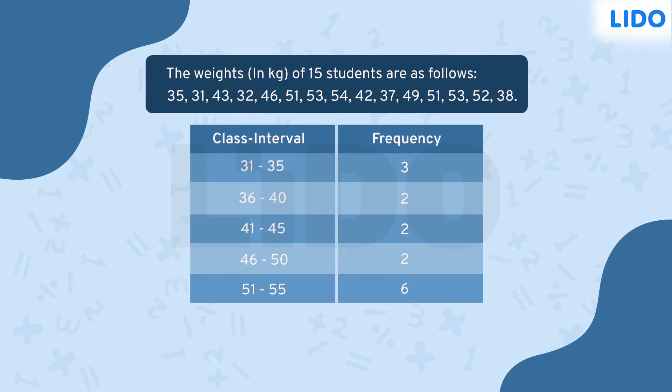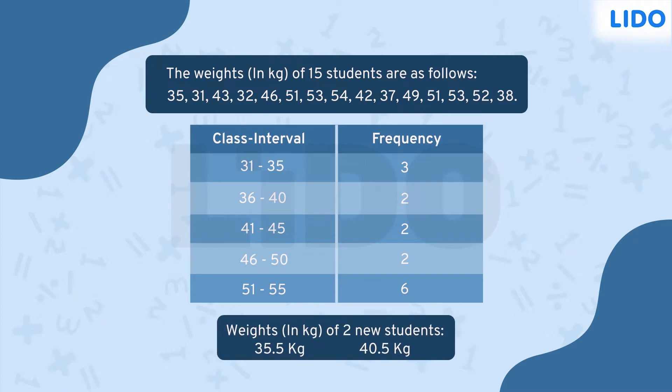This class has two new students, Sonia and Rahul. They weigh 35.5 kilograms and 40.5 kilograms respectively. We need to include their weights in this table now. The question is, in which rows?